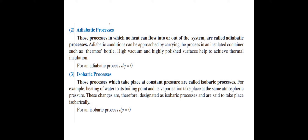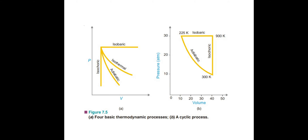ΔP is the change in pressure, where initial pressure is P1 and final pressure is P2. Since there is no change in pressure, P2 − P1 = 0, and P2 − P1 is designated as ΔP. So ΔP = 0, meaning that process is an isobaric process.